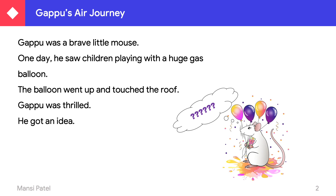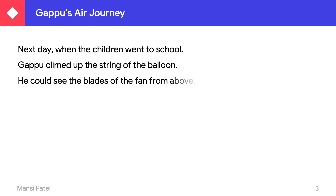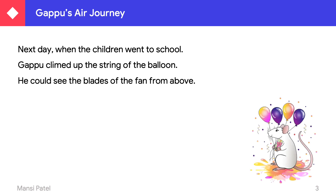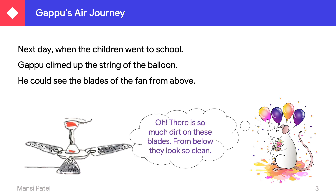The next day, when the children went to school, Guppu climbed up the string of the balloon. From above, he could see the blades of the fan, and the blades looked like this from above. He said, 'Oh, there is so much dirt on these blades — from below they look so clean!'